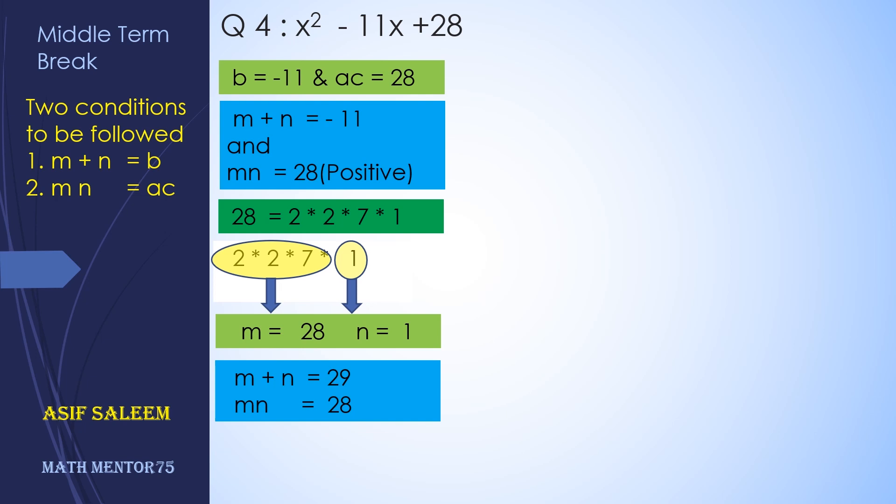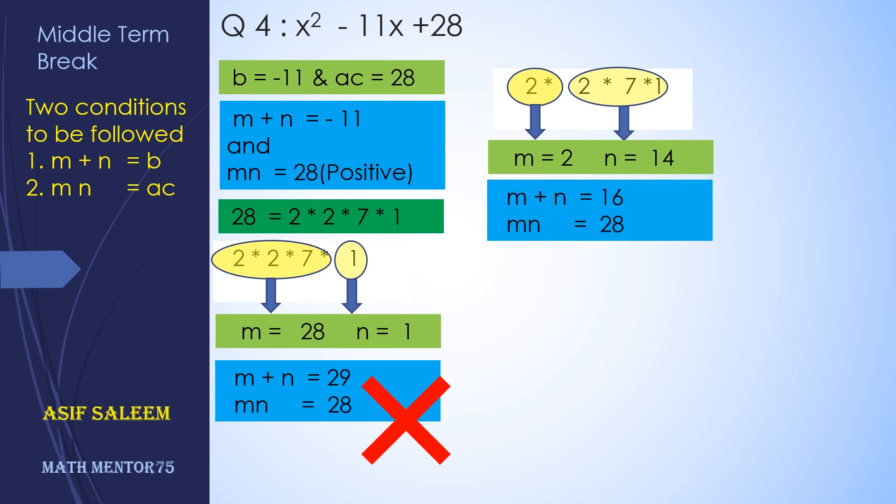Let's consider another choice, another grouping. We are going to group them 2 and 2 × 7 × 1, so m is 2 and n is 14. When we add them we get 16 and product is 28, but again this is not the right choice.